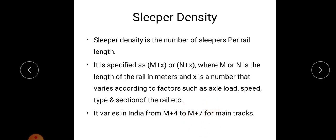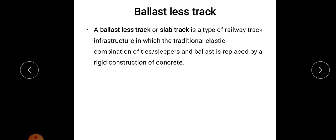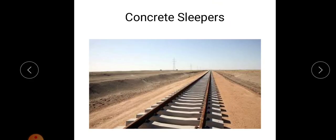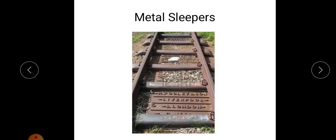Or in some other areas we are using M+4, that is 13+4 is 17. So the sleeper density varies from 17 to 20. Like that we are deciding the number of sleepers. And that number of sleeper per rail length is known as sleeper density. So these are about sleepers, type of sleeper and functions of sleeper.